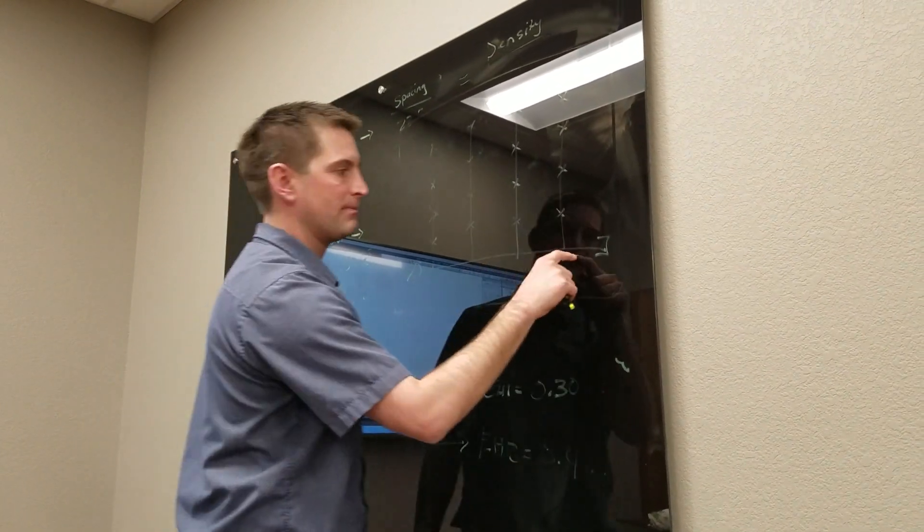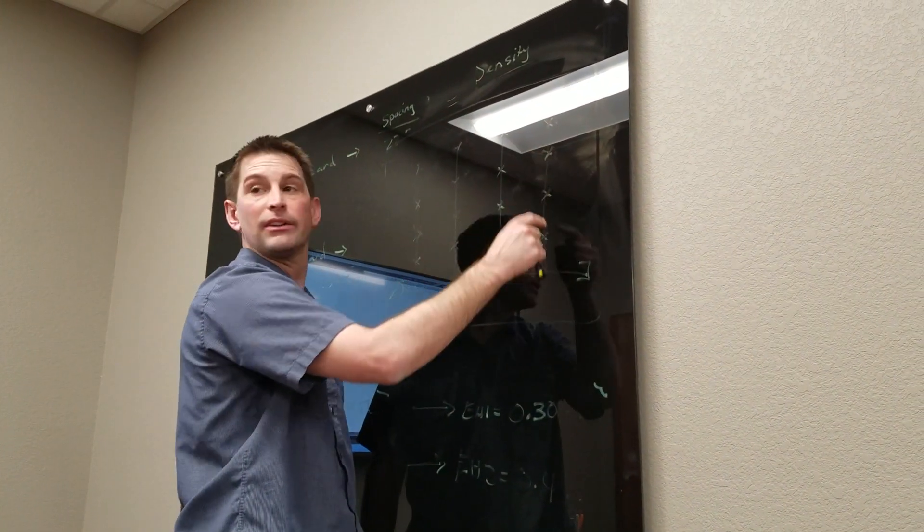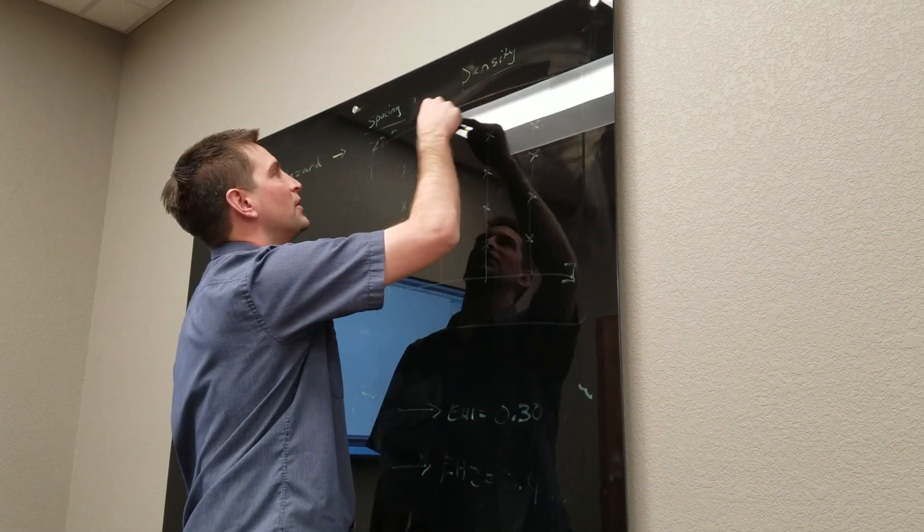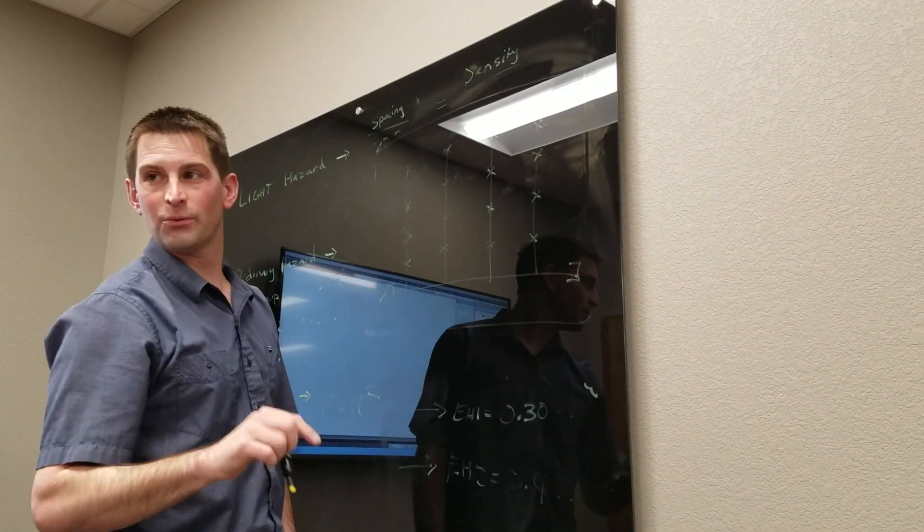Okay, this is your main, this is your branch line, these X's are sprinklers, this is your walls of your building. Okay, really quickly.